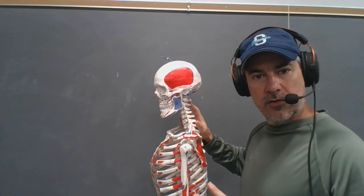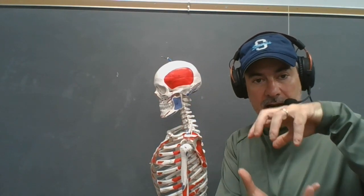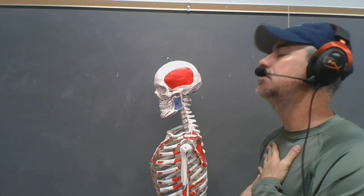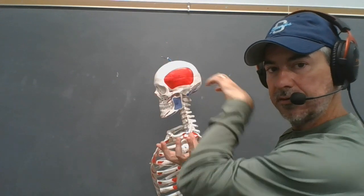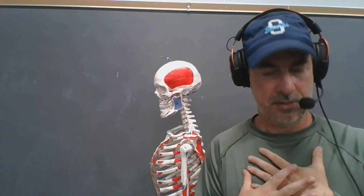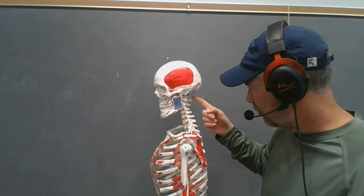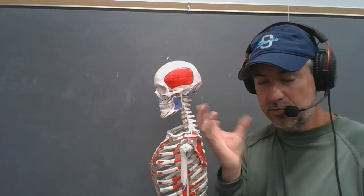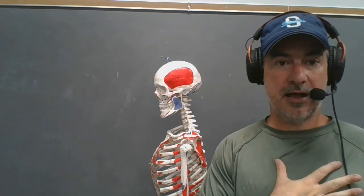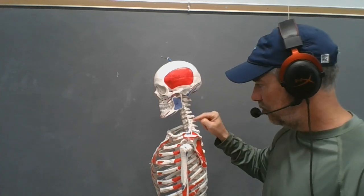The cervical vertebrae can summate little bits of gliding in the sagittal plane, frontal plane, and transverse plane. You get a lot more overall motion gliding transverse because of those special first and second cervical vertebrae — the atlas and the axis — where you get most of your rotation. You get about 180 degrees because of that specialty articulation, and then the rest contribute a bit more to summate the total.